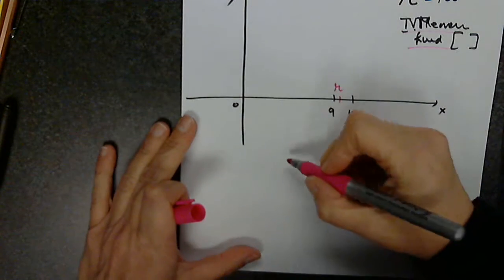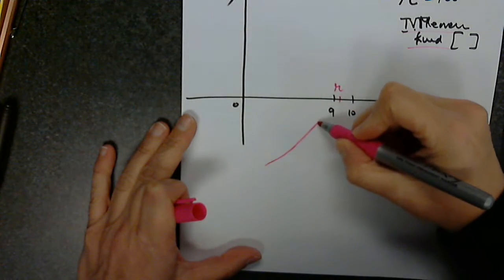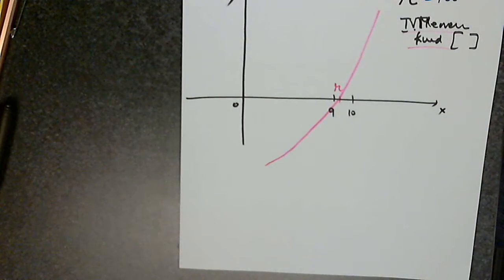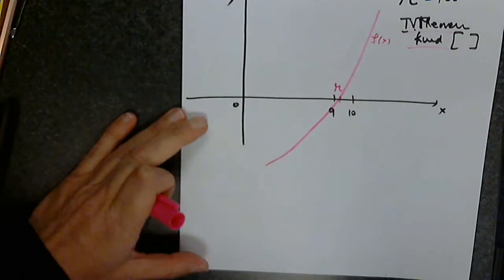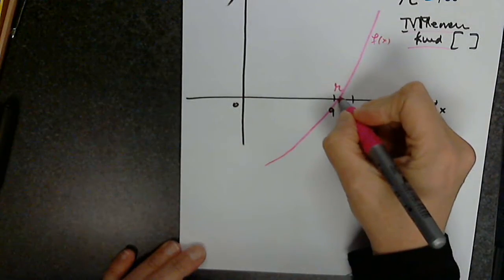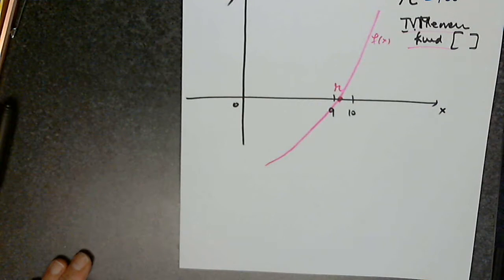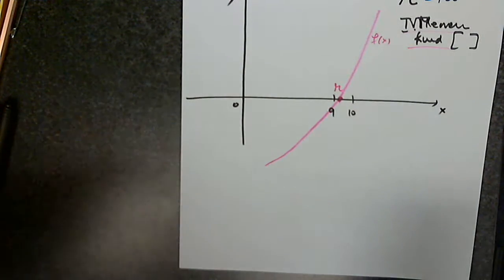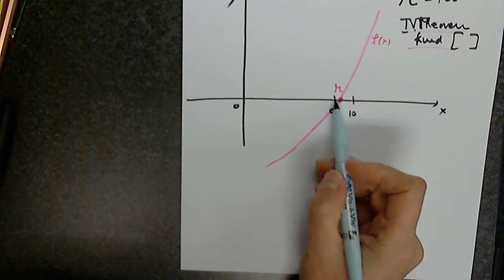So let's suppose the function looks like this, and this is my f of x, and I know that it crosses the x-axis at that point. That is the x-intercept or the root or the solution of the equation. I have to start, I have to use a starting point.